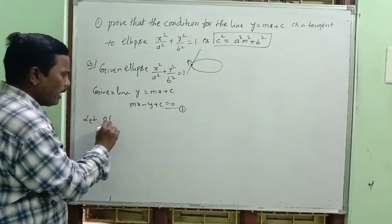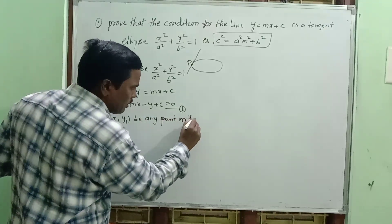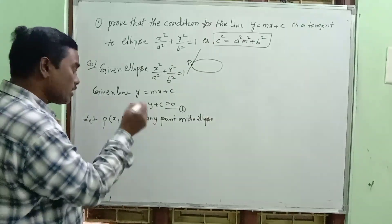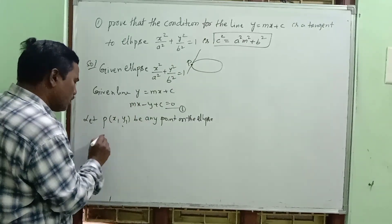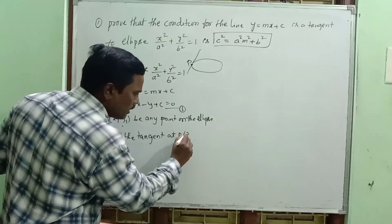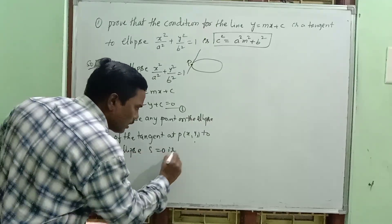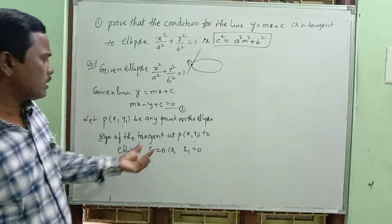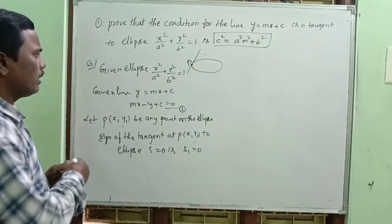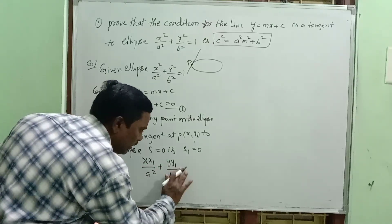Let P(x1, y1) be any point on the ellipse. Since the point lies on the ellipse and the line is tangent at that point, we write the equation of the tangent at P(x1, y1) to the ellipse S equal to 0 using the S1 equal to 0 formula: xx1 by a square plus yy1 by b square minus 1 equal to 0.